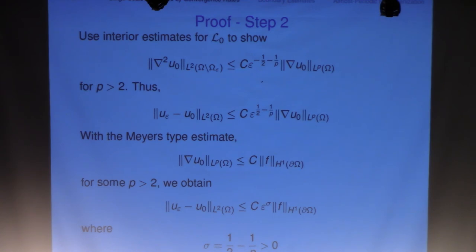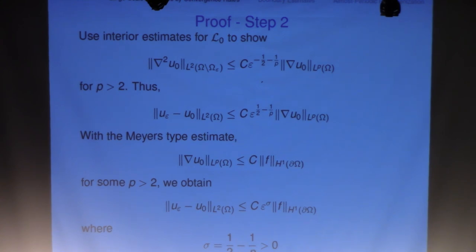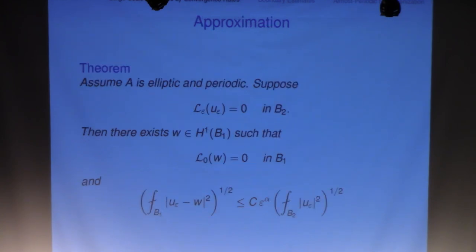The price is that p is greater than two, and we use the so-called Meyers-type estimate to bound the L^p norm for some p greater than two depending on ellipticity, times the H^1 norm of the boundary data. Together you get a power sigma equal to one-half minus one over p, which is positive. This argument does not require any regularity on the coefficient and works for Lipschitz domains.